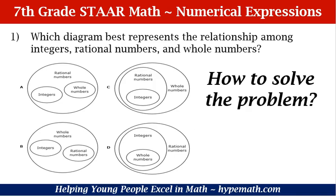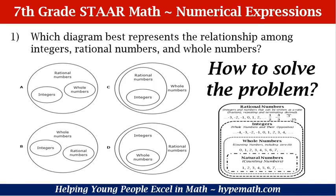How do we solve the problem? In order to solve the problem, we need to know and understand rational numbers. We have a Venn diagram on the right-hand side that shows us those relationships. Rational numbers come first. Within that, integers are rational numbers. And then within integers, whole numbers are integers. Lastly, natural numbers are whole numbers. So we're saying that these all have interrelationships together.